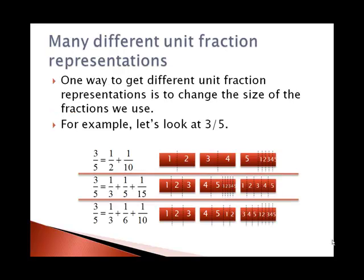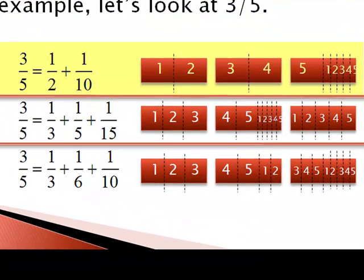One way to get different unit fraction representations is to change the size of the fraction we use, especially at the outset. For example, here's 3/5 and it's broken down into 1/2 plus 1/10. I took 3 loaves of bread, cut off pieces that were size 1/2, 5 of those, and then cut the remaining half into 5 equal pieces to give me the 1/10.